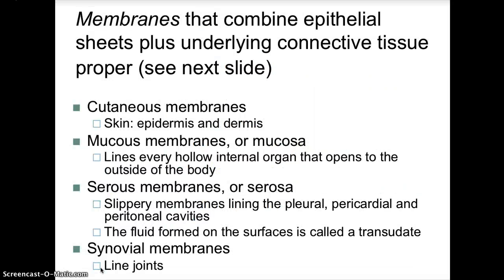Lecture five: histology. We will start off by talking about membranes very quickly, then go into muscular tissue, our last type of tissue nervous tissue, and close the chapter with a little about dermal layers and cancer.